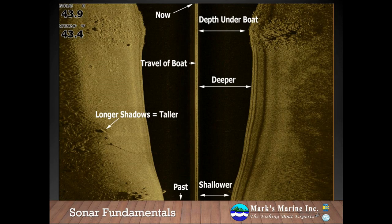Longer shadows indicate that an object is taller, like the rock you see in the picture. You can think of it like shining a flashlight beam from the side of the boat — as it strikes an object, the longer the shadow it casts, the taller that object is. Remember, brighter returns are stronger signals, darker returns are weaker signals. You can see what a hump looks like based on the decreasing depth as we go up towards that rock pile.